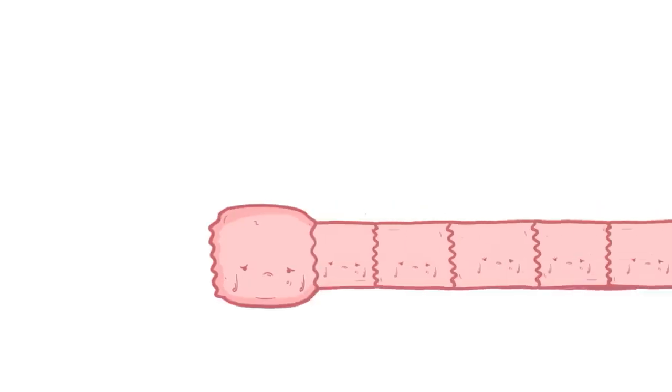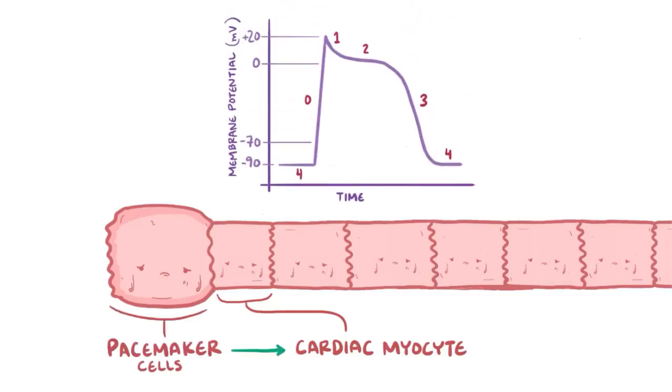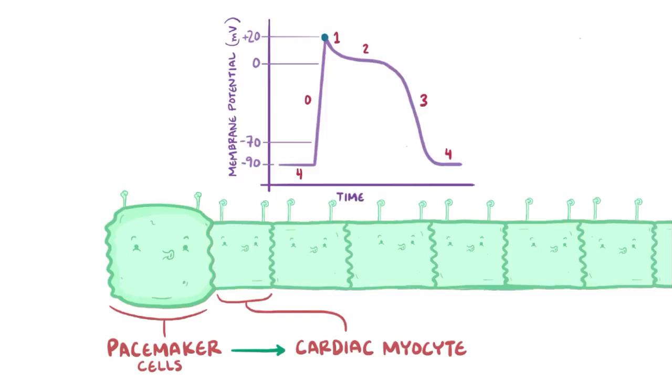Alright, as a quick recap. Cardiac myocytes receive action potentials, or rapid voltage changes, from pacemaker cells. In phase 4, the myocytes are at rest. In phase 0, sodium channels open up and there's an influx of sodium ions that makes the myocyte depolarize. In phase 1, potassium channels open up, and there's an outflux of potassium ions that brings down the charge a little bit.